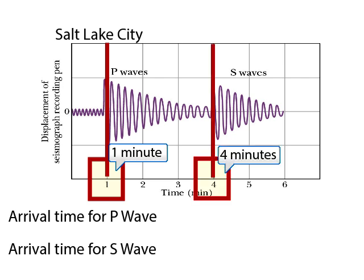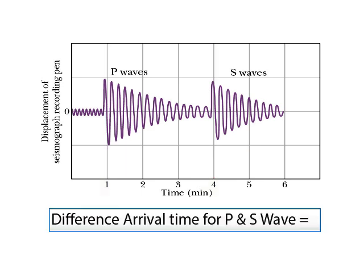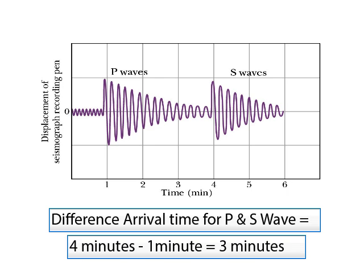So let's write that down. The arrival time for the P wave was one minute. The arrival time for the S wave was four minutes. So the difference in arrival time for the P and the S wave is equal to four minutes minus one minute, which is equal to three minutes.